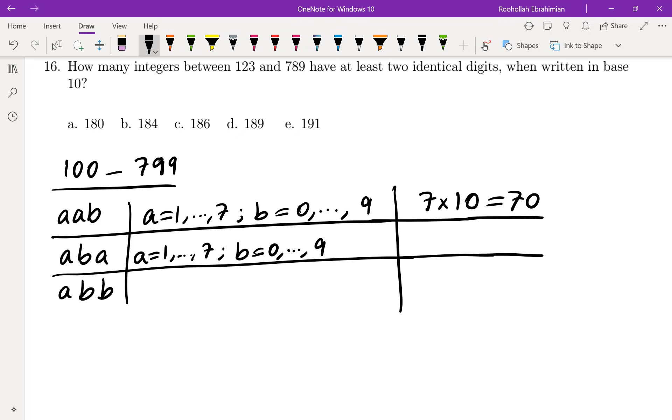The ones that I have already counted are a a a, so I'm going to make sure that b is not a. So there are 7 possibilities for a and there are 9 possibilities for b, so we get 63 possibilities for the second case.